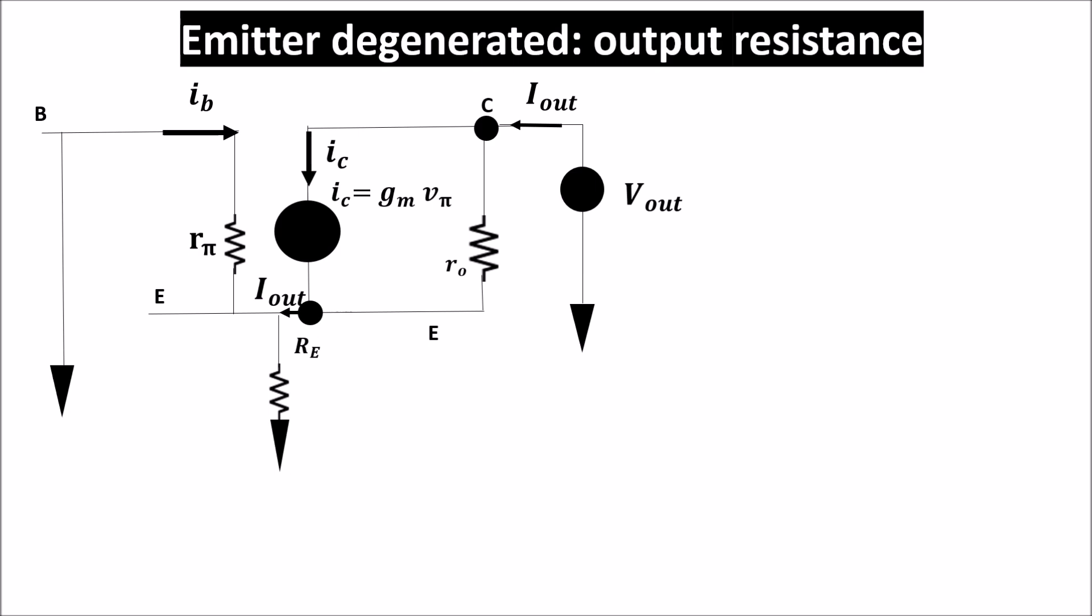The resistance in that node is R_E in parallel with r_pi, so the voltage across R_E, which we can call V_E, is I_out times the parallel of R_E and r_pi.